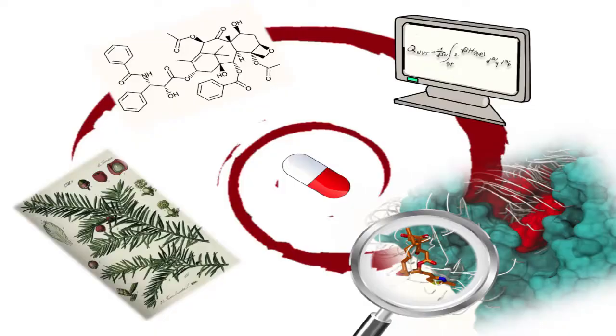But before you can use something, before you can release something to the public for pharmaceutical purposes, you have to understand which component inside the plant has activity and how it works — that component has to interact with human cells. Which is this target? It took them 30 years to understand that the target was tubulin, a protein inside our body that is necessary for cellular reproduction.